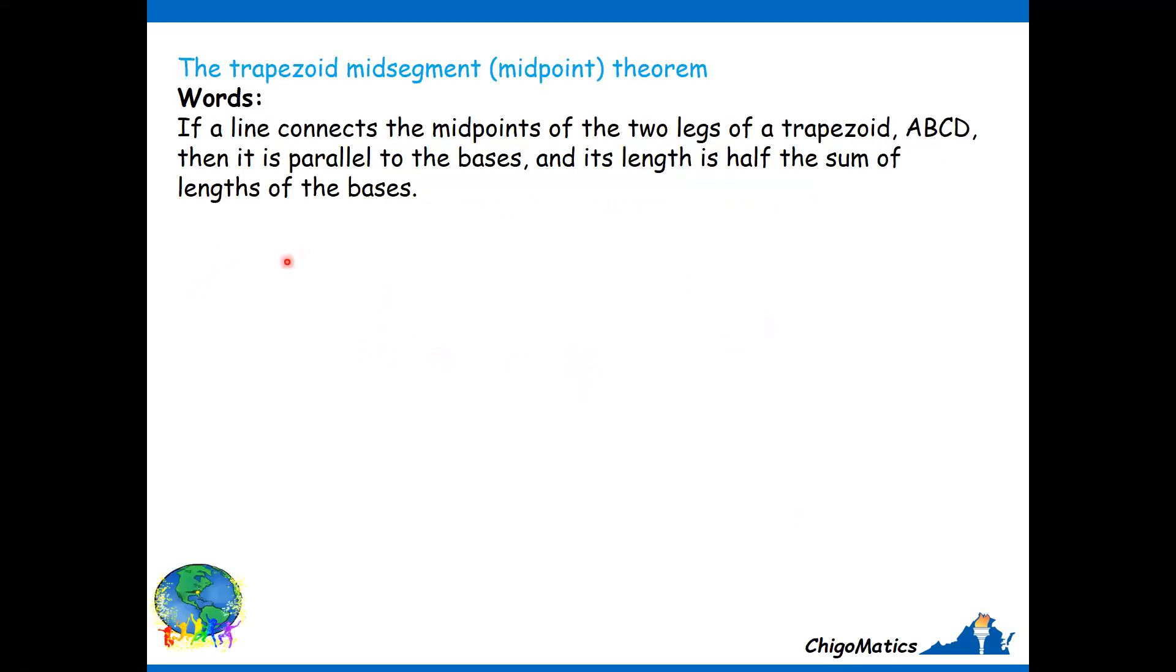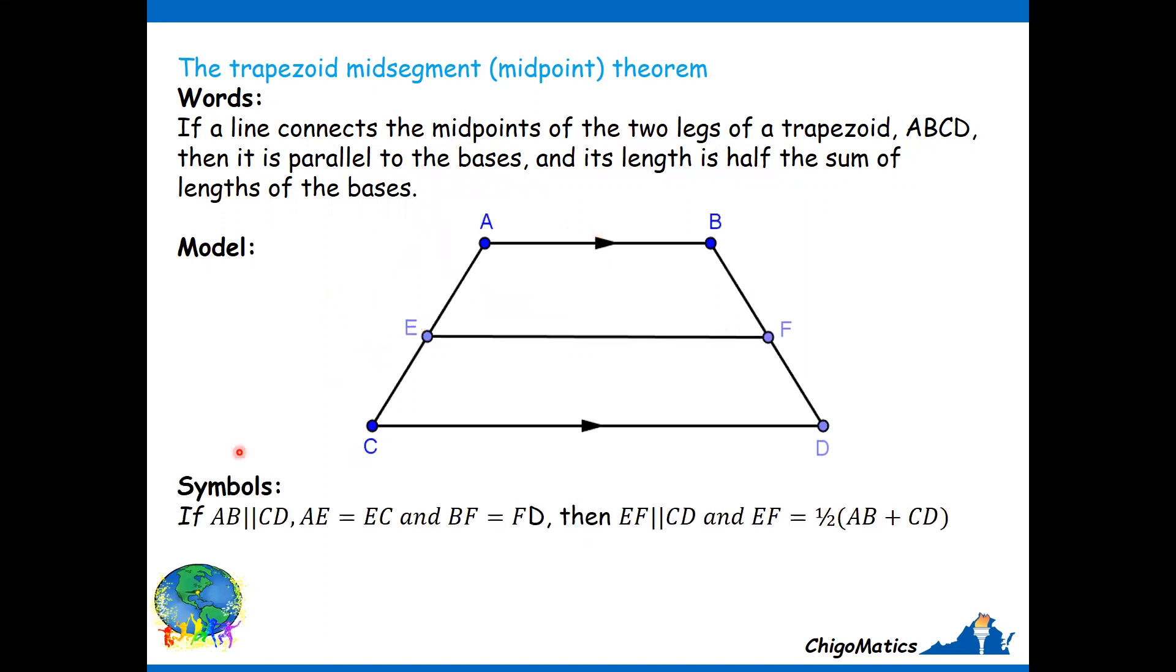The theorem states that if a line connects the midpoint of the two legs of a trapezoid ABCD, then it is parallel to the bases and its length is half the sum of the length of the bases. In symbolic form, if AB is parallel to CD, AE equals EC, and BF equals FD, then EF is parallel to CD and EF is half the sum of the bases, that is AB plus CD.